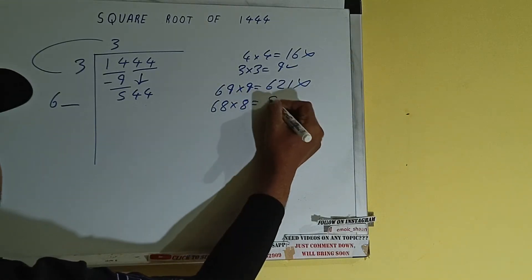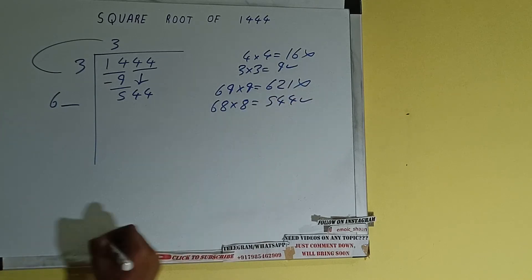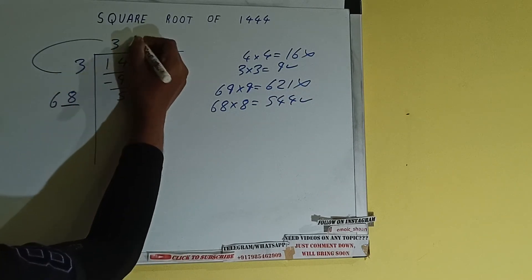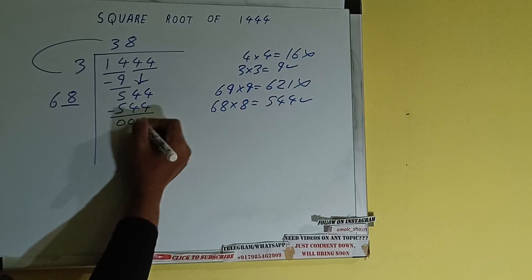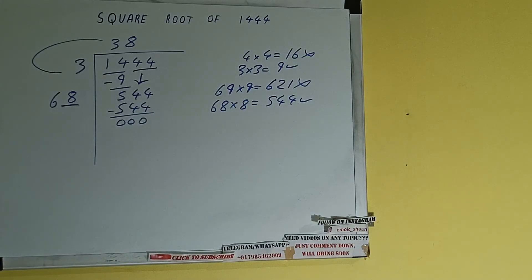And we'll be getting 544, which is good to take. So 8 here and 8 here. 544 subtract, 0 will be left. Once we get 0, whatever is in the question will be the answer, that is 38.